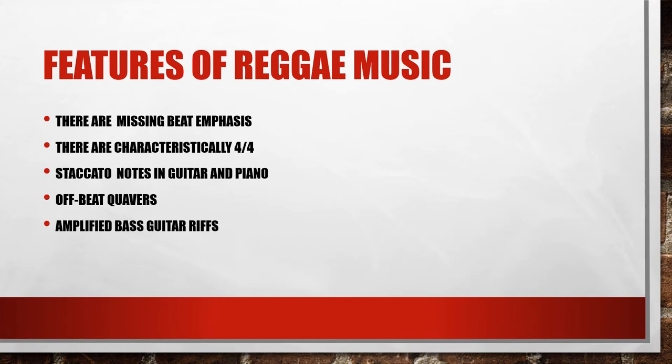Features of reggae music. There are missing beat emphases. They are generally in a 4-4 time signature and have many staccato notes in the guitar and piano parts. There are some off-beat quavers and some bass guitar riffs, which are repeated sections of rhythms.